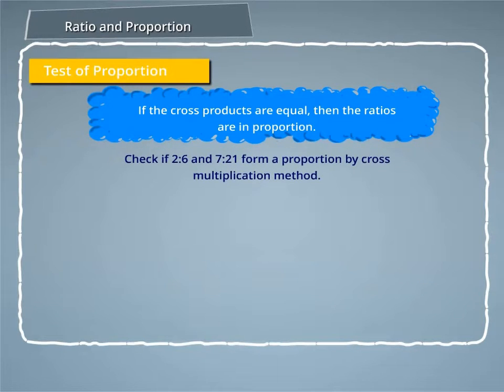Let's check if 2 is to 6 and 7 is to 21 form a proportion by cross multiplication method. 2 is to 6 is equal to 2 by 6 and 7 is to 21 equal to 7 by 21.